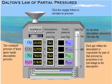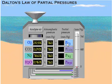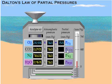Click the oxygen button to calculate its pressure. Watch the total pressure rise in the pressure gauge to the right. Oxygen comprises 20.9% of the atmosphere. The pressure exerted by oxygen is 20.9% of the total pressure of 760 millimeters of mercury, which equals 159 millimeters of mercury. This value is known as the partial pressure of oxygen and is written as P with a subscript O2.